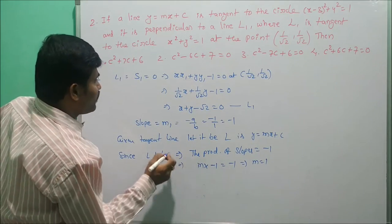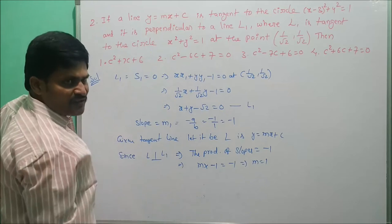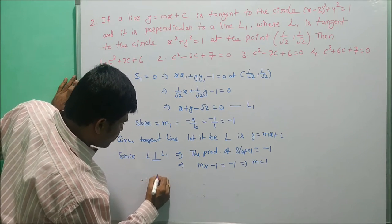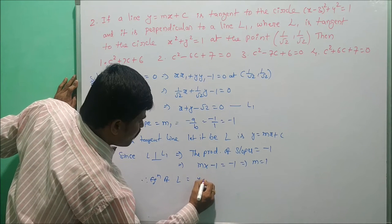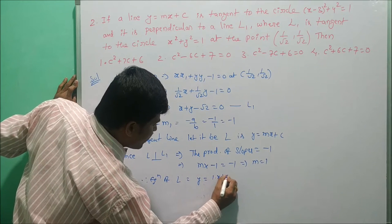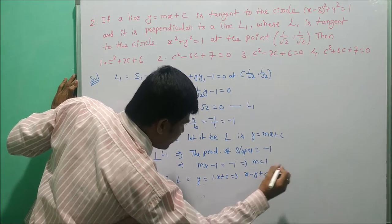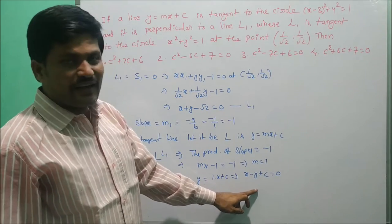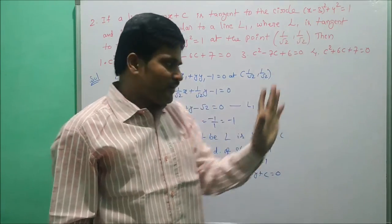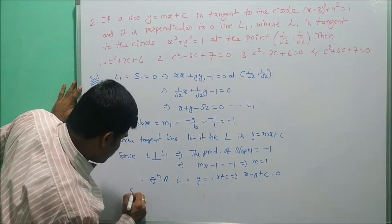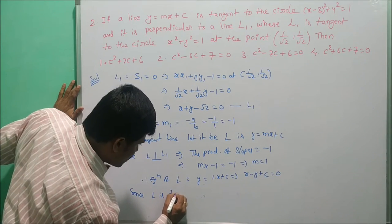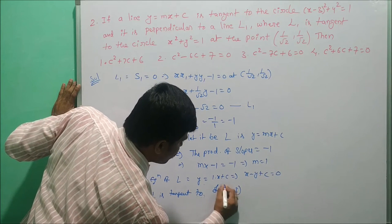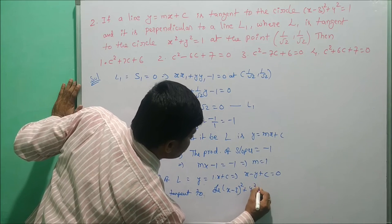The slope of the tangent line L is 1. Therefore, the equation of L is y = 1·x + c, which implies x - y + c = 0. This is tangent to the circle (x - 3)² + y² = 1.